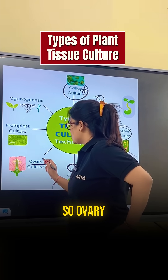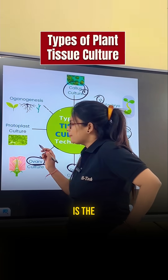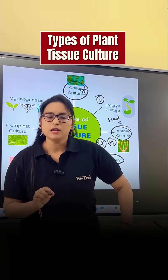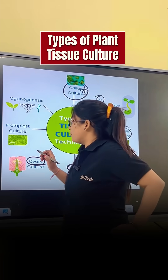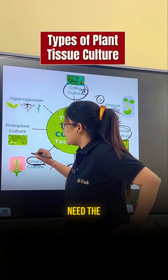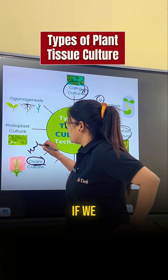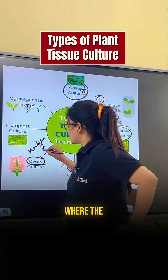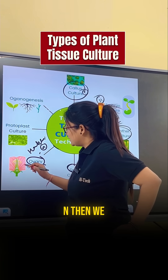Next is ovary culture. The ovary is the female reproductive part of the flower. Ovary culture is also used when we need haploid plants — plants where the chromosome number is reduced — and then we go for ovary culture.